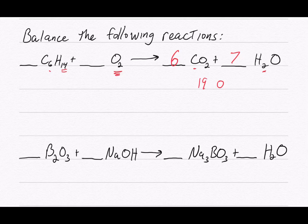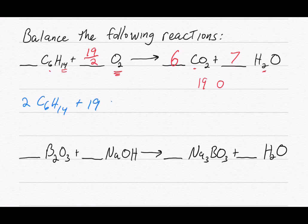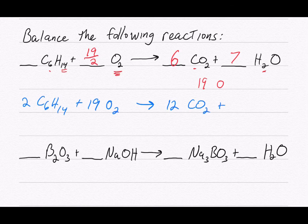So what we can do, since we need 19 oxygens and they come in pairs, is to have 19 halves of a pair, which gives me 19 oxygen atoms. Now when I write my final balanced reaction, I don't want to have a fraction, so what I'm going to do to get rid of that half is to multiply everything by 2. That gives me 2 C6H14 + 19 O2 → 12 CO2 + 14 H2O.